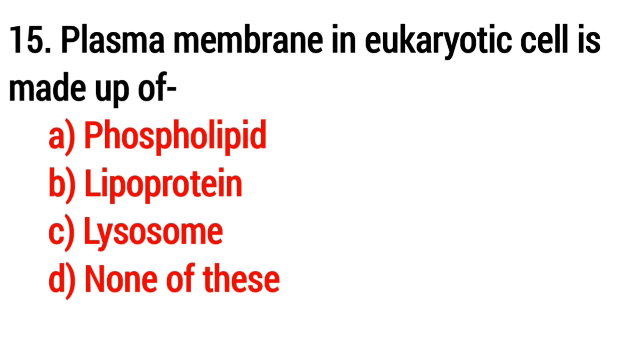Question 15: Plasma membrane in eukaryotic cell is made up of... Answer: Option A, phospholipid.